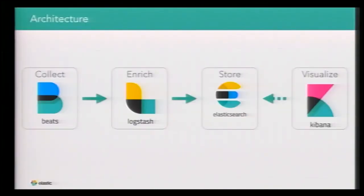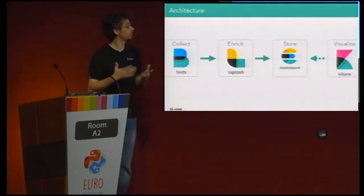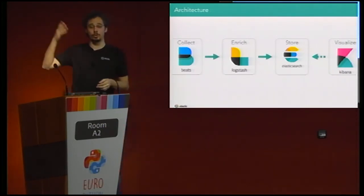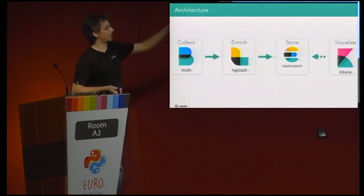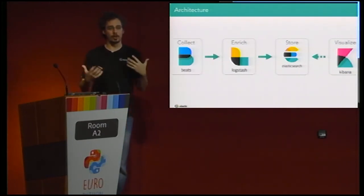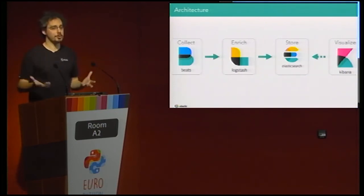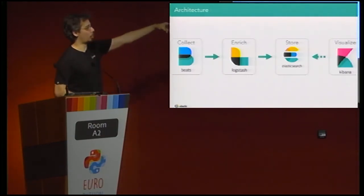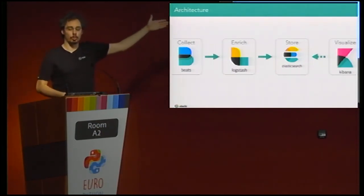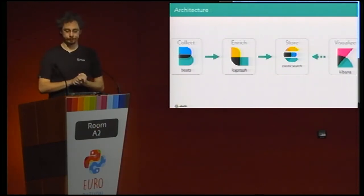Putting it all together, this is how it looks logically: you collect the data with Beats, send them to Logstash to enrich them, store them in Elasticsearch, and visualize them using Kibana. The ultimate architecture would add a queue — like Kafka — between Beats and Logstash, and between Logstash and Elasticsearch. But that's only necessary at hundreds of thousands or millions of requests per second. If you only need thousands per second, you can do it directly and be perfectly fine. If you need more capacity, you just add more machines and more nodes at each level.